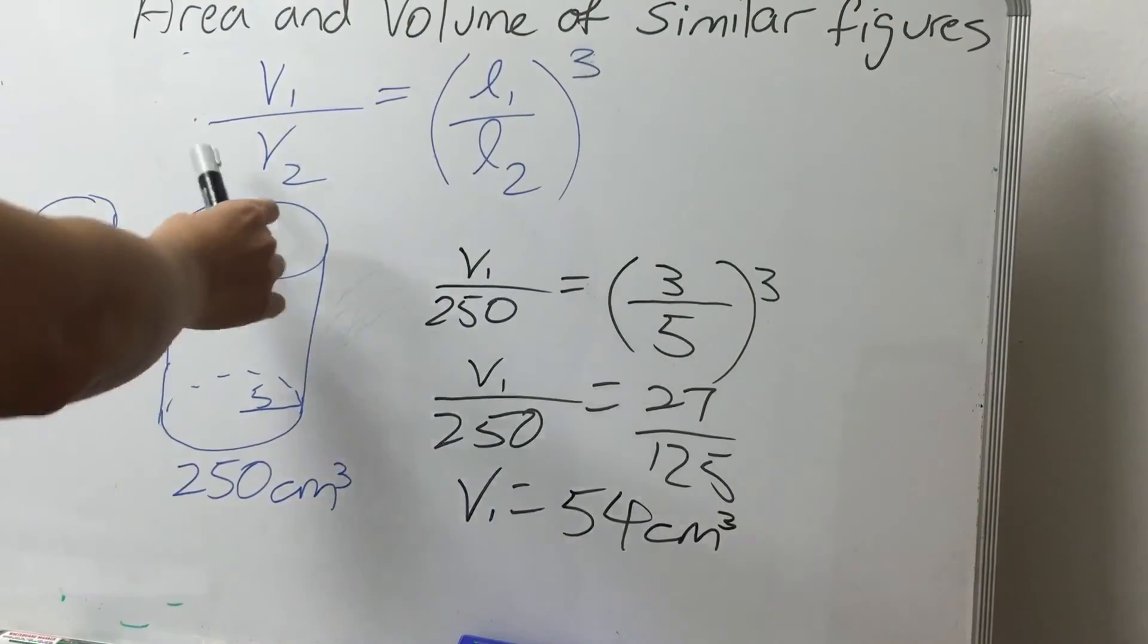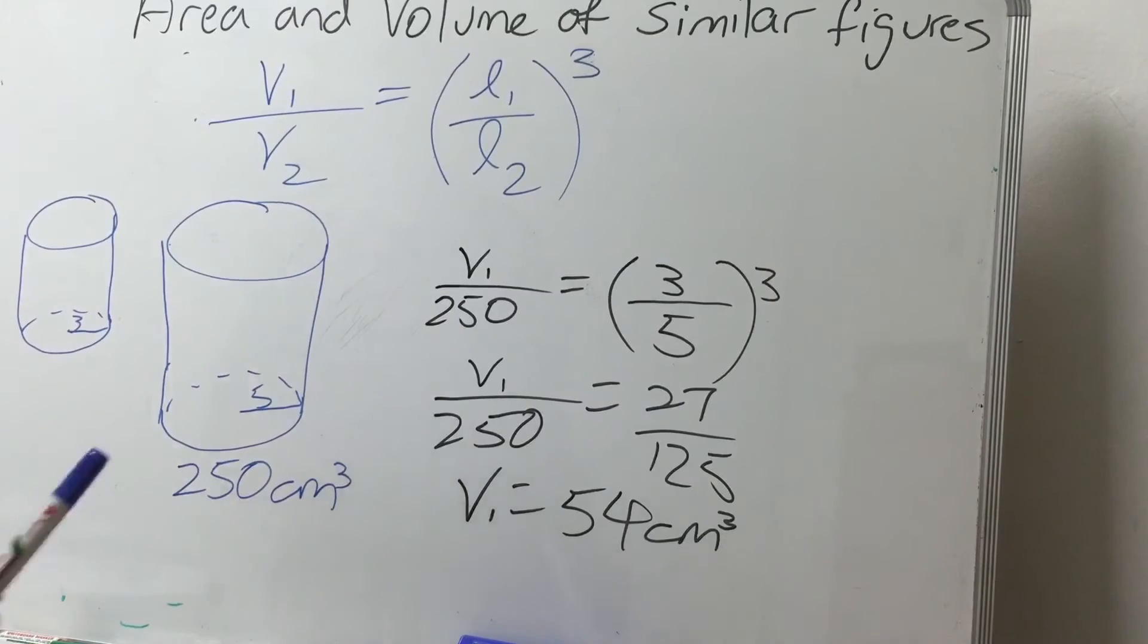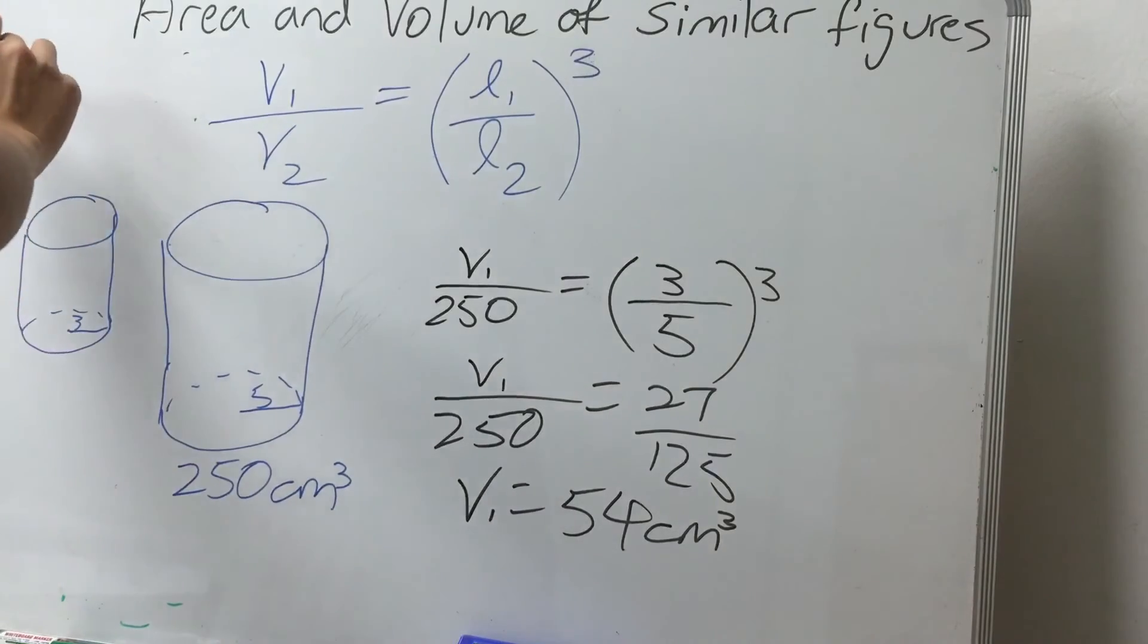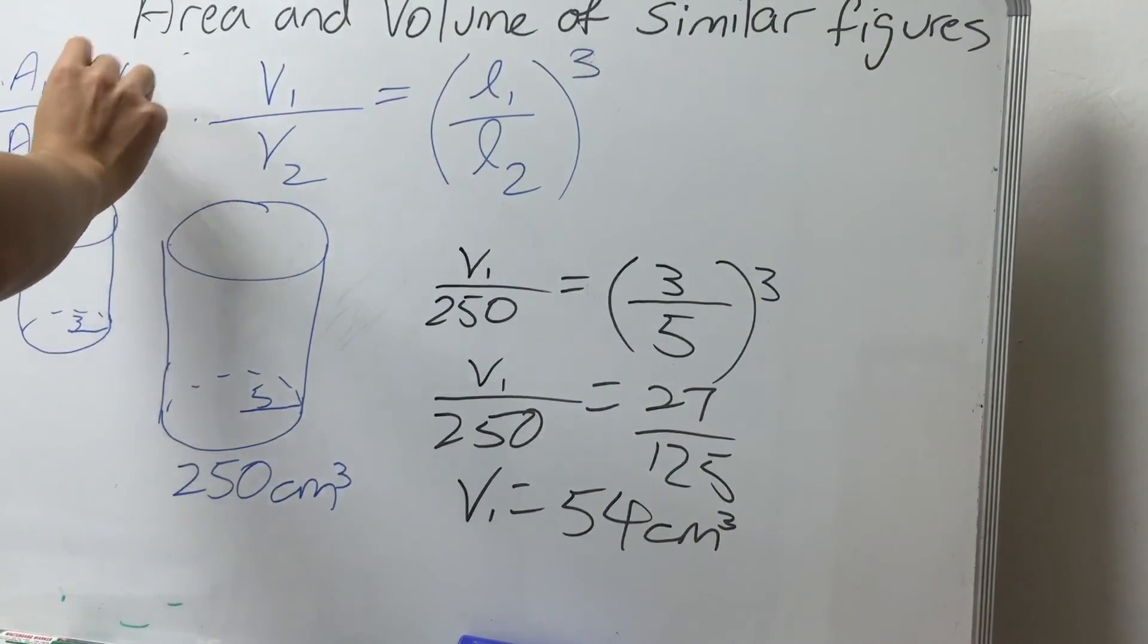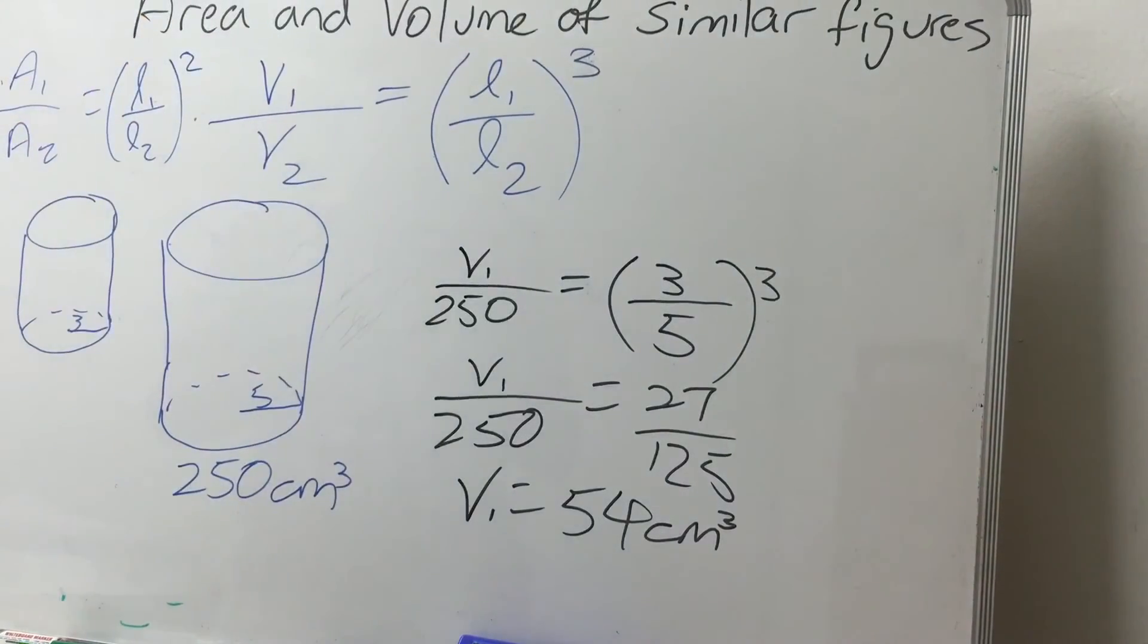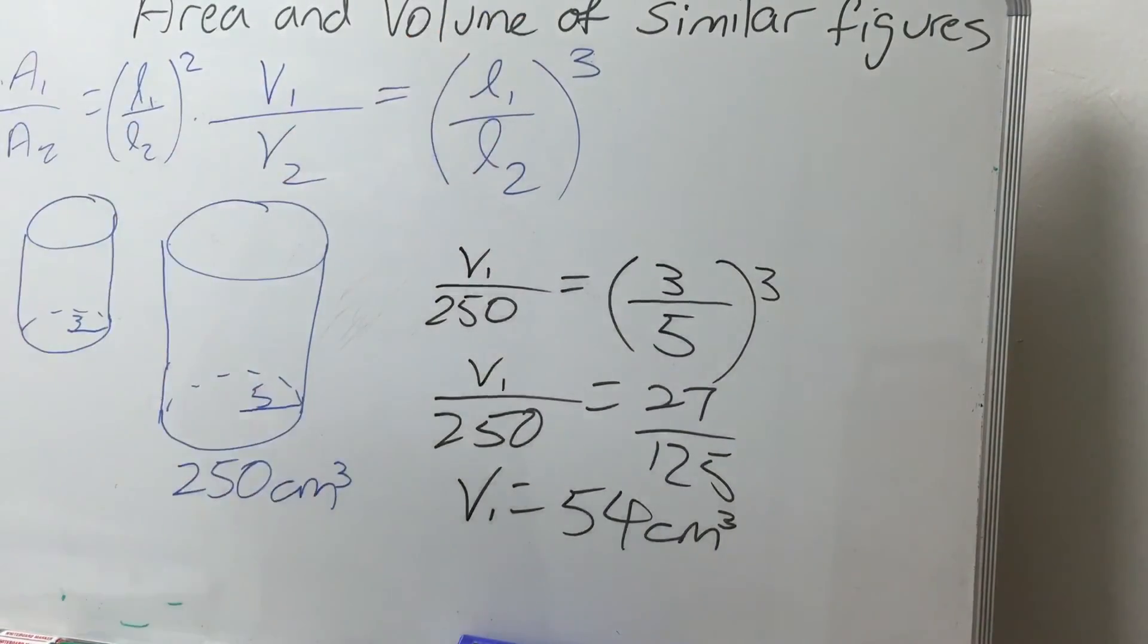So this is the formula for the volume of similar figures. A quick recap: the area of similar figures will be A₁ over A₂ equals to L₁ over L₂ squared, whereas for volume of similar figures, it is given by L₁ over L₂ cubed.